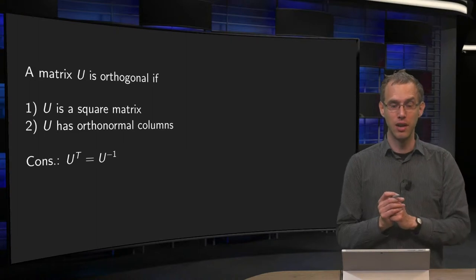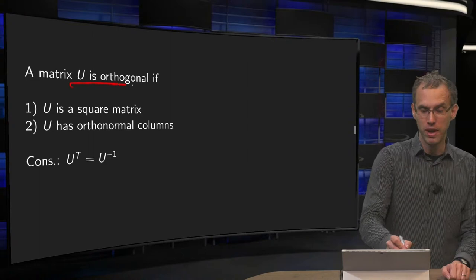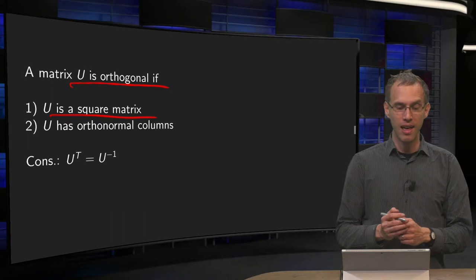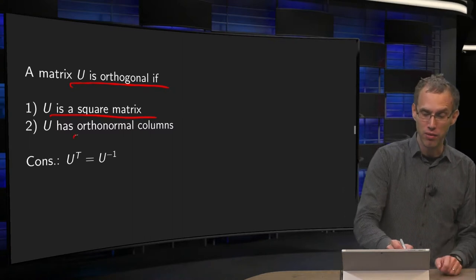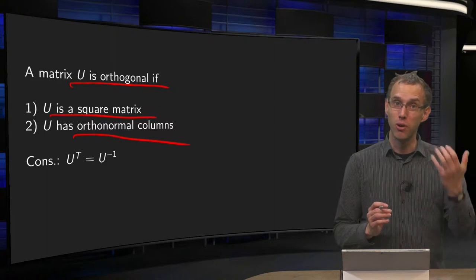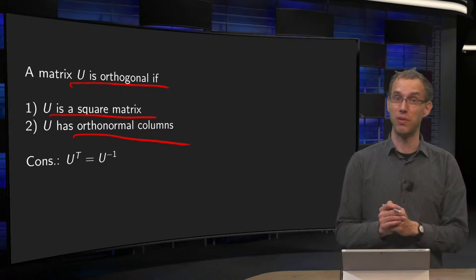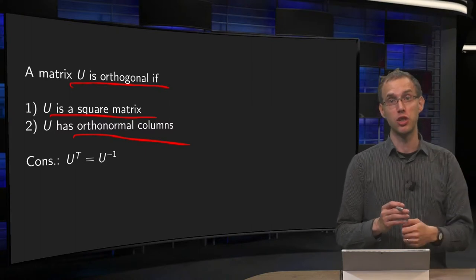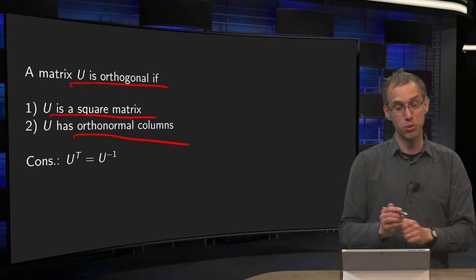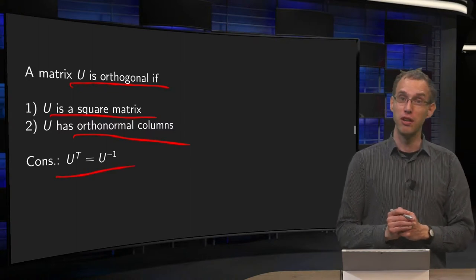Let us remind you of when a matrix U is orthogonal. A matrix U is called an orthogonal matrix if it has to be a square matrix, and you need to have orthonormal columns. That is a bit deceptive, so your columns have to be orthogonal and they have to be of length 1. So an orthogonal matrix is a square matrix and has orthonormal columns. But it has a nice consequence, because then the transpose is the same as the inverse of the matrix.